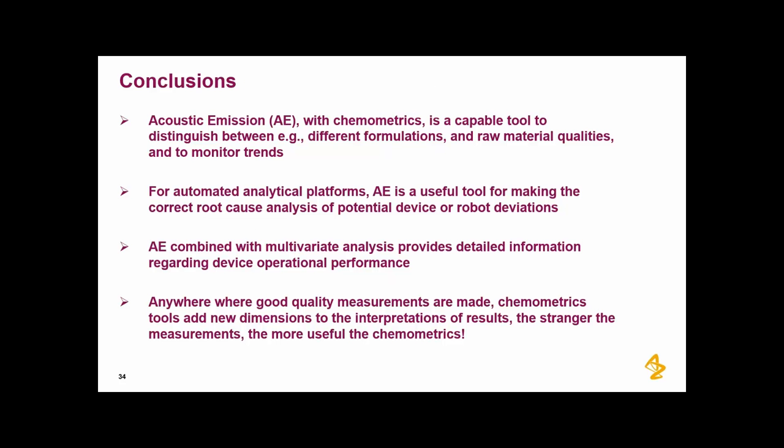Moving into some conclusions, I think we have shown that with this, not only in this talk but with other experiments, that acoustic emission combined with chemometrics is a capable tool to distinguish between various things that change the sound like different formulations and raw material qualities. And it's also quite efficient to see change and monitor trends. It's especially efficient in an automated platform environment. And it's a useful tool at least for prototype robot and automated platforms where we can distinguish between problems related to the device, the prototype device or the analysis. And as we move on and we do these high resolution plots, we can really see that AE combined with multivariate analysis, you can get detailed information regarding the device and its operational performance.